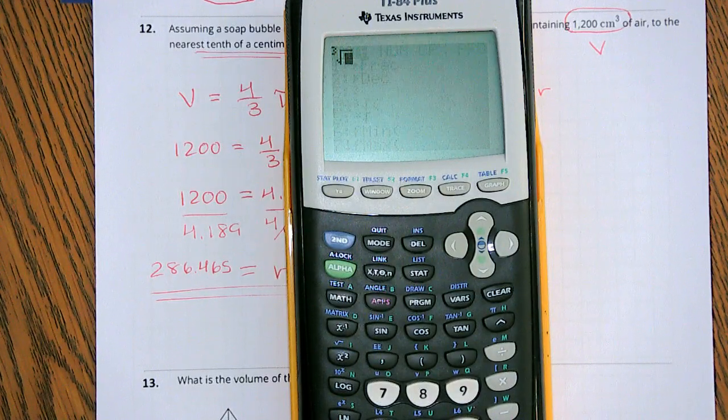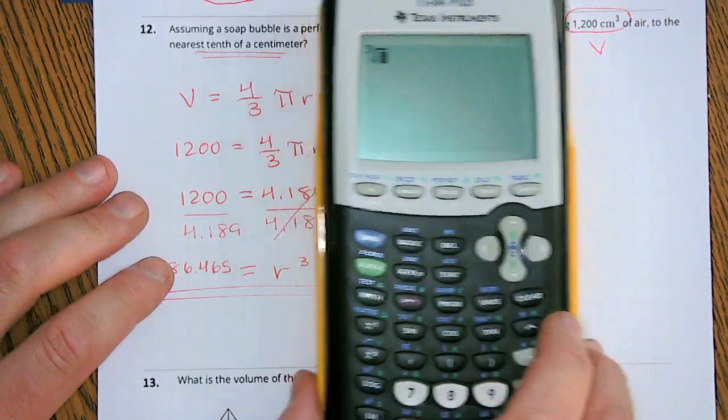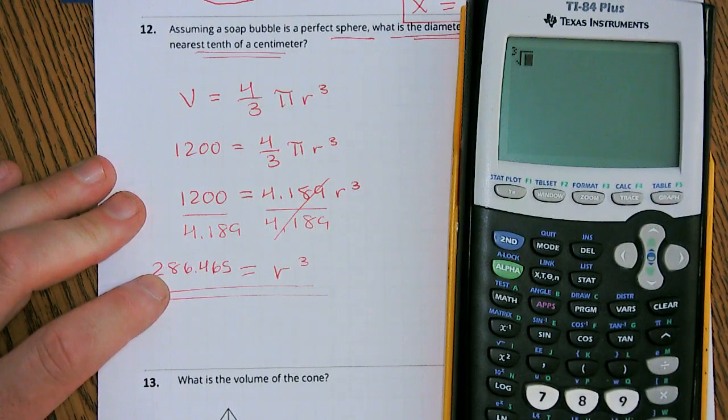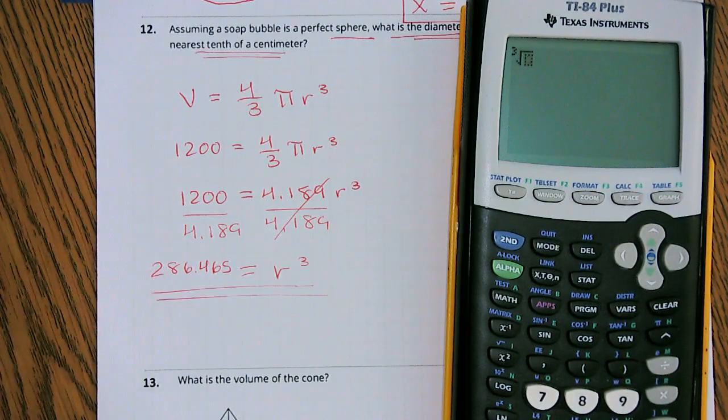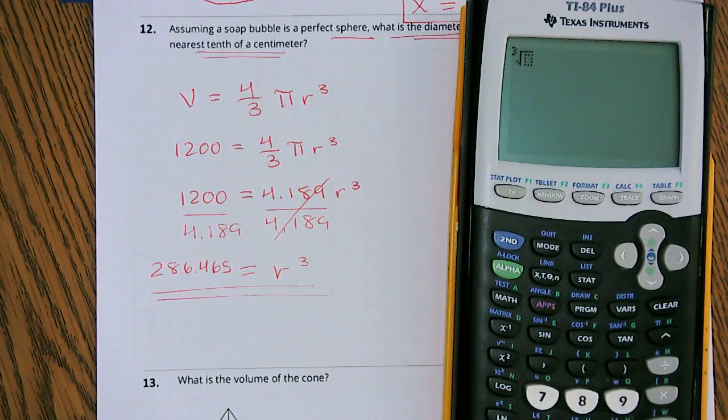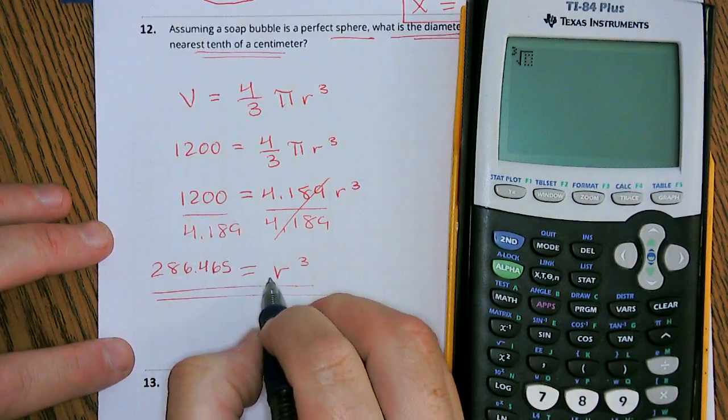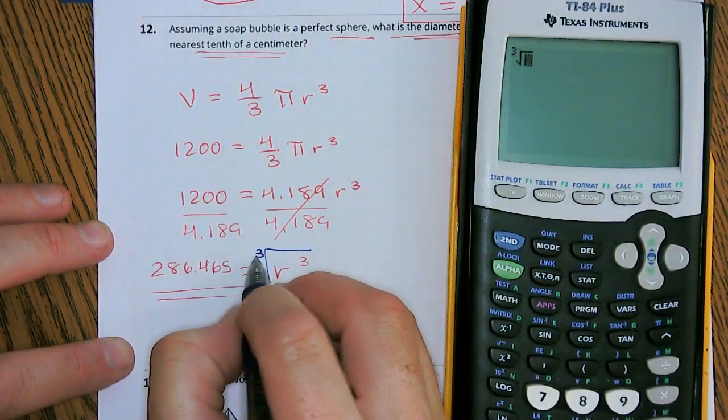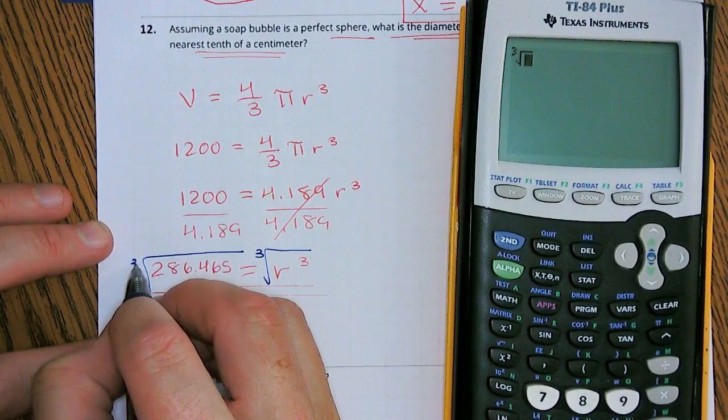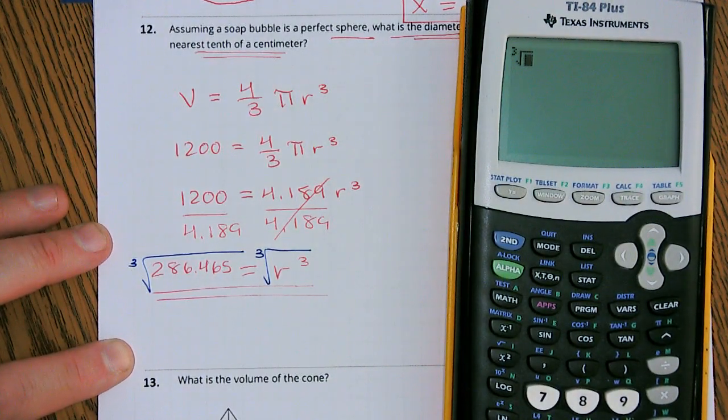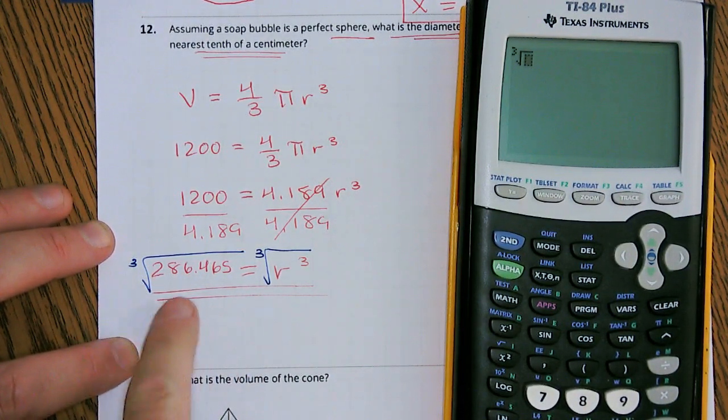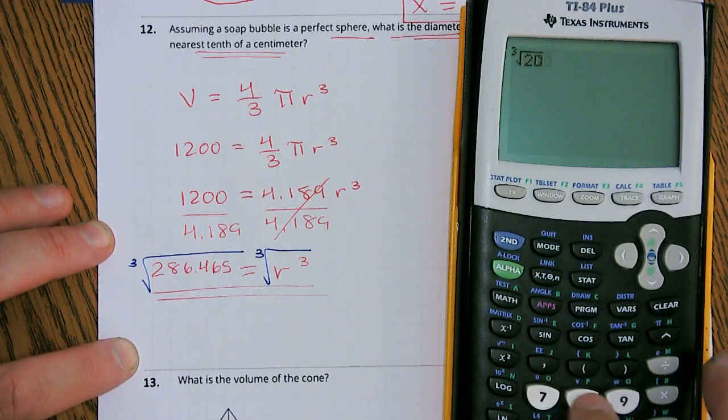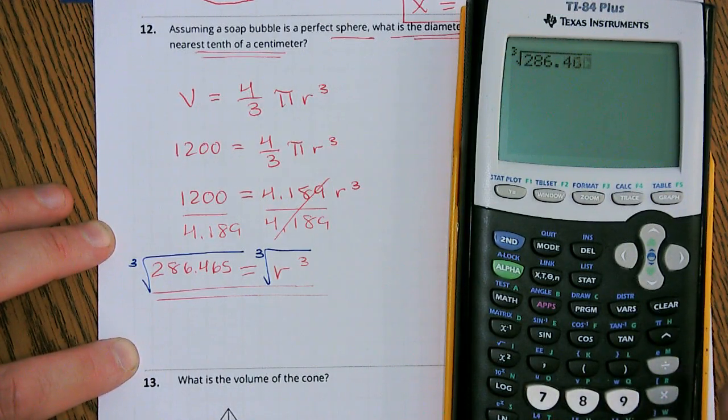So now it's the cube root because a cube root undoes a cube. Cube root undoes a cube. So we're basically taking the cube root of both sides of our equation. So let's put that number underneath our radical, 286.465.